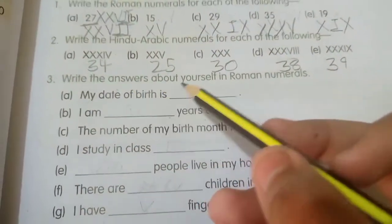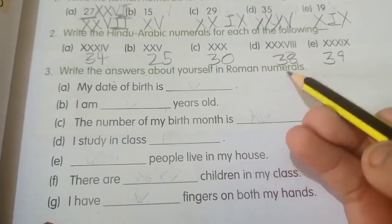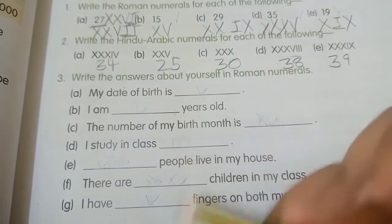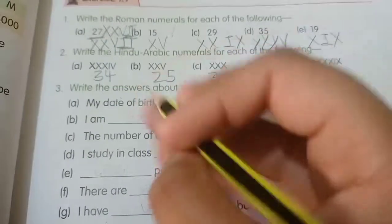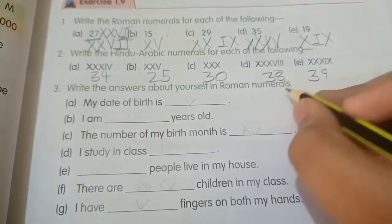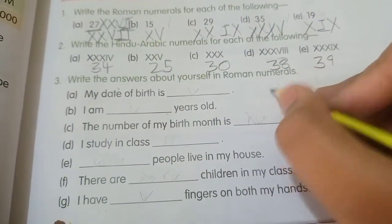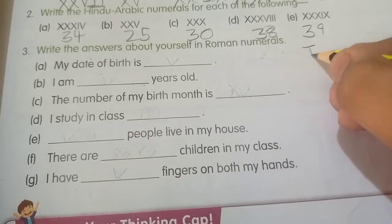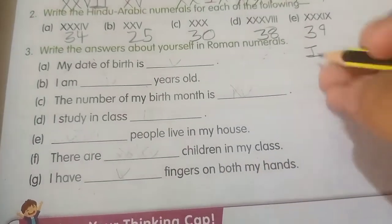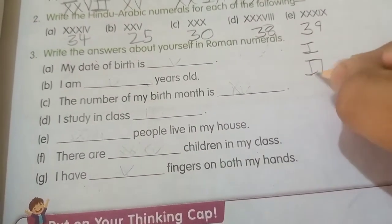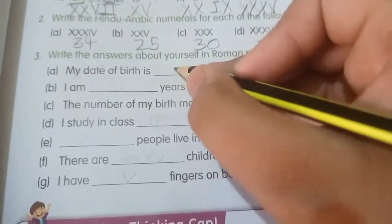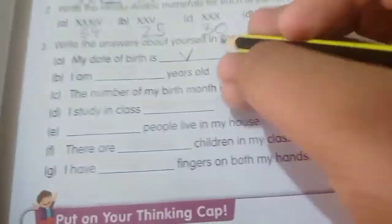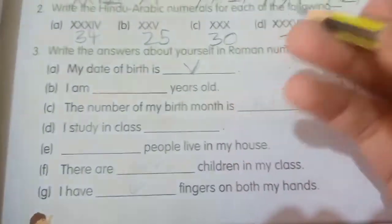Now third. Write the answers about yourself in Roman numerals. So we have to write in Roman numerals. My date of birth is - whatever your date of birth is, look at which date you are born on. If the date of birth is 31, or my date of birth is 5, so we have to write V.